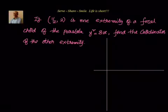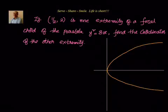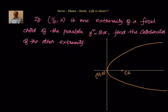The first thing I will do: take y² = 8x. We know that y² = 8x means the parabola will be opening to the right side. The parabola is like this — y² = 8x. We also know that the vertex is at (0, 0) and the focus is at (2, 0).